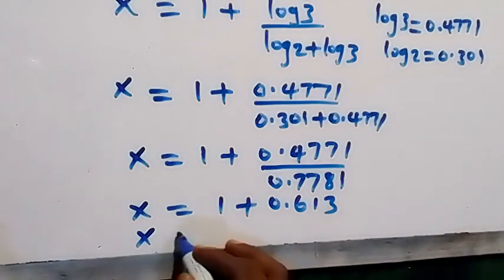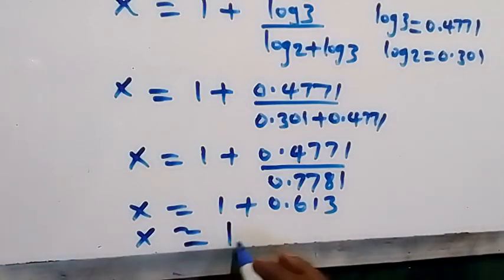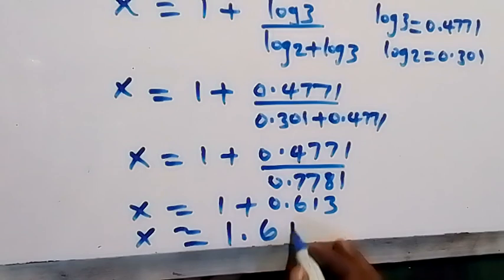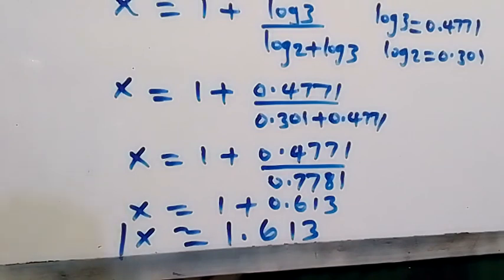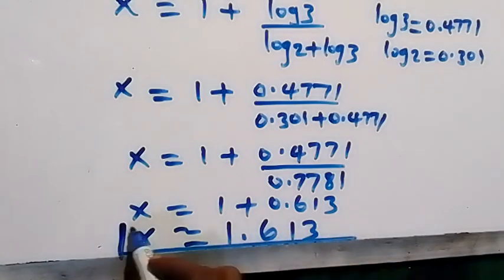That is approximately 1.613. So here we have x equals to 1.613. So here we have the approximate value of x in this exponent problem. And we have come to the end of this class.